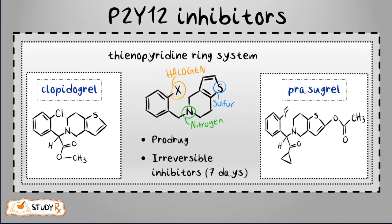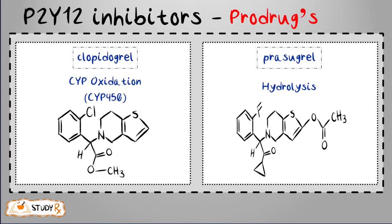They act as P2Y12 inhibitors — that's their mechanism of action; they inhibit P2Y12 receptors. Clopidogrel and prasugrel have in common that they are prodrugs, meaning after consumption they are metabolized into the active drug. They also share a thienopyridine ring system, though prasugrel has a fluorine instead of chlorine. Clopidogrel undergoes CYP oxidation via cytochrome P450 enzymes.